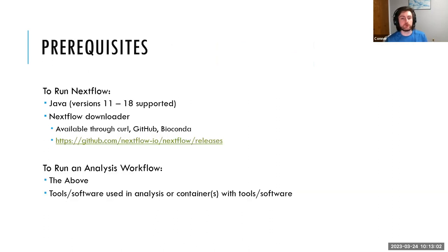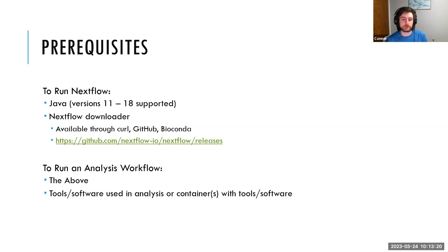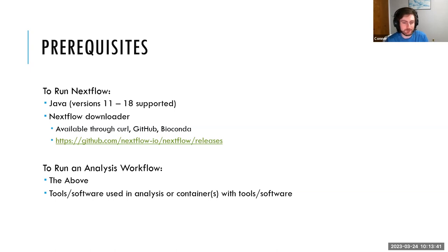So let's say you're officially interested in installing Nextflow. What do you need? All you need for Nextflow itself is Java — any version between 11 and 18 works — and the Nextflow downloader, which you can get through the command line via curl, or download from GitHub or on Conda through BioConda. Keep in mind, if you're installing Nextflow, you probably want to run a workflow, so you'll also need the tools and software used in your analysis, or containers with them installed.